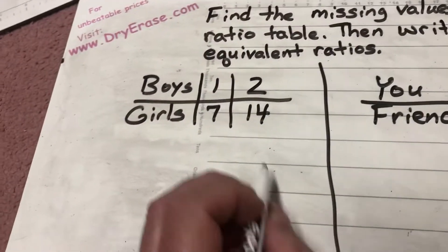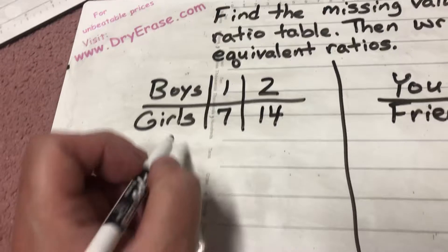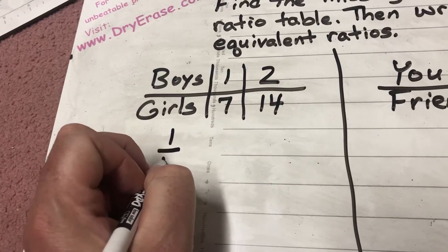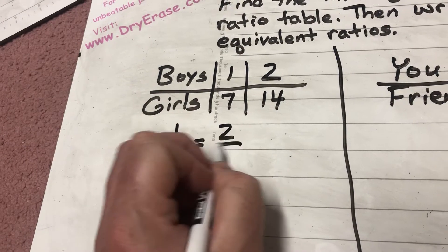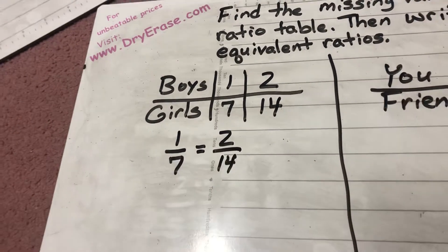And then when it says write the equivalent ratios, well, I'm going to look at what I have here. My equivalent ratios are 1 over 7 equals 2 over 14.